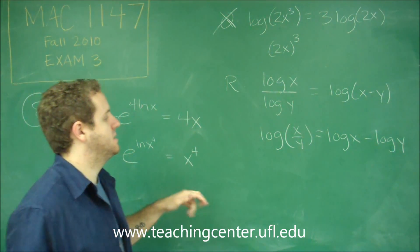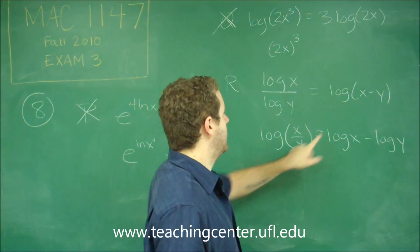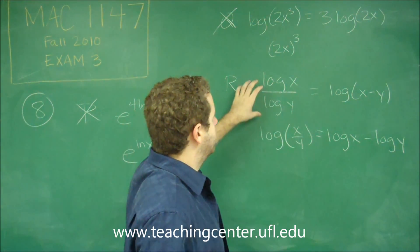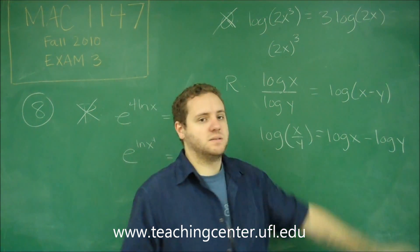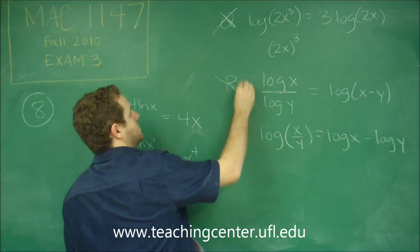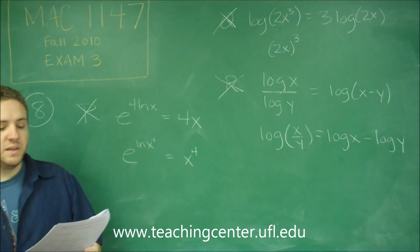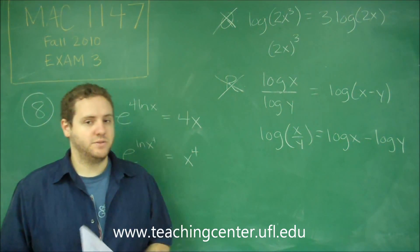You notice what they did here is they reversed the operations. They put subtraction inside is division outside. That's not true. A division inside is the same thing as a subtraction of two logarithms. So R is also false. So that leaves us that none of these are true, and they're choice A.